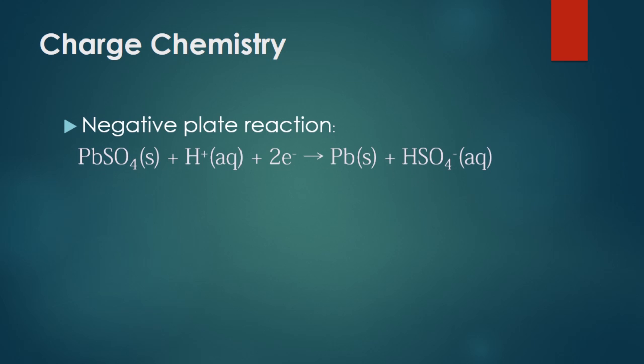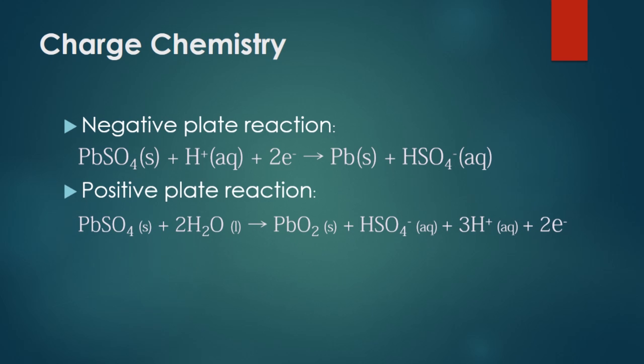The cathode here has negative sign. Lead sulfate gains two electrons and is reduced into lead again. At the anode, electrons are being pulled out of the anode by the EMF source. The anode here has a positive sign. Here lead sulfate loses two electrons and reacts with water to give lead four oxide.